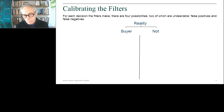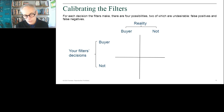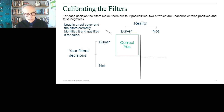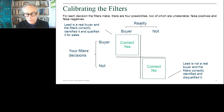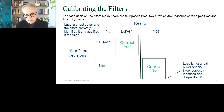We can look at this in a four-box model. There's a reality associated with each lead — either it's from an organization with an active buying process, or it isn't. Your filters will decide whether they think it's a buyer or not. In the best case, the filter says yes, and that matches the reality. It's also a correct decision if the person is not part of a buying group and your filters identify that — the earlier, the better. And that's actually the right decision 90% of the time, so we want to make sure we get that right.